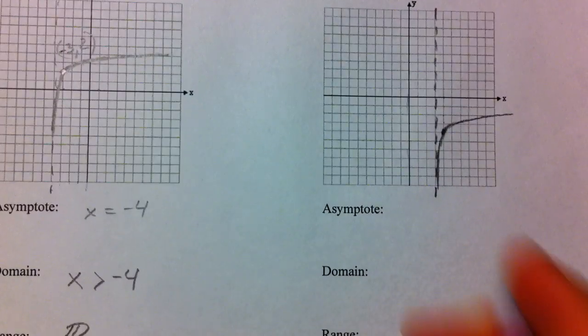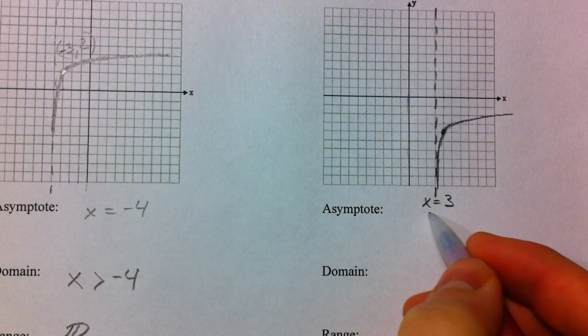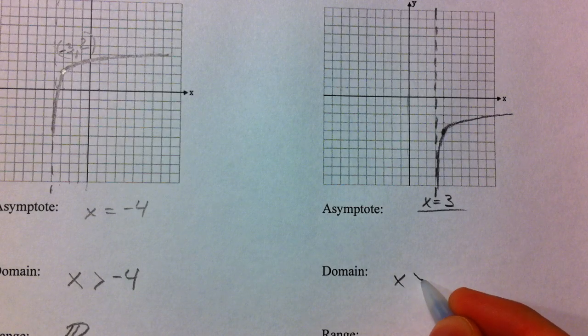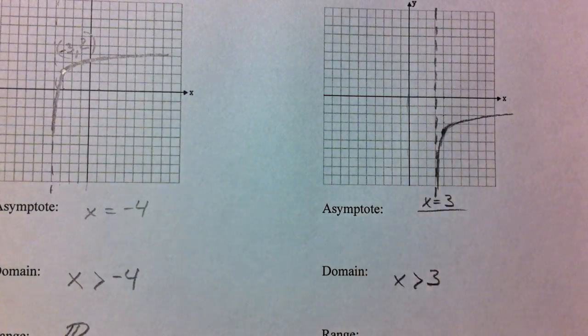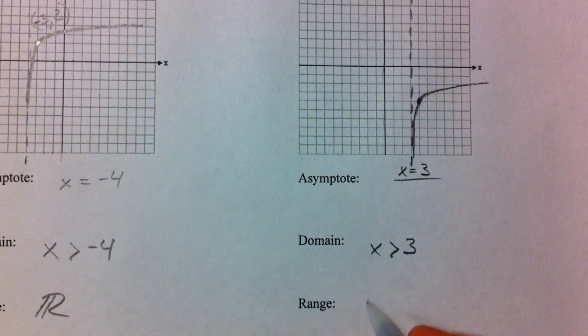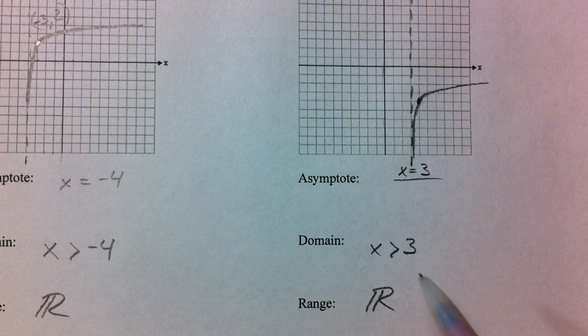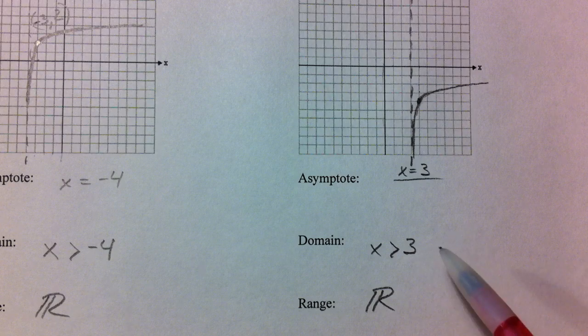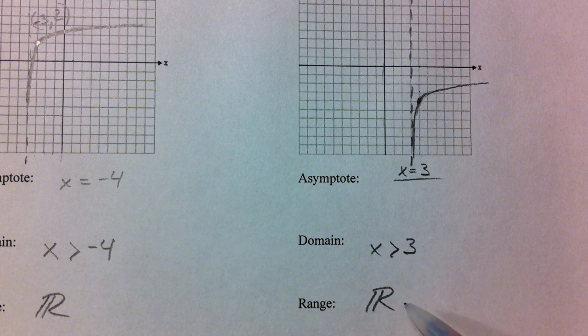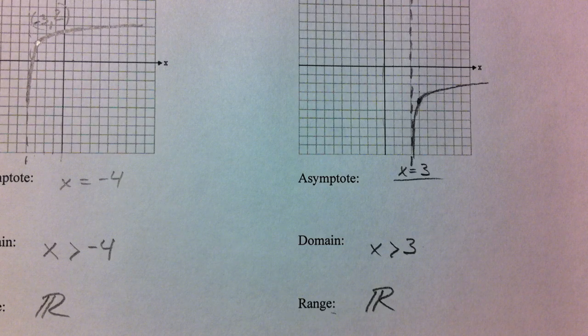It talks about how our asymptote was x equals 3 because we shifted. Our domain was x has to be greater than that 3 because we can't plug anything in at 3 because we can't take the log of 0. And our range is still all real numbers. Notice how the domain is like the range of exponential functions, and the range is like the domain of exponential functions.